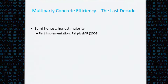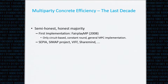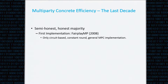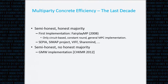In the multi-party case, there's also been tremendous improvements. The first implementation was FairplayMP, and this is in fact the only circuit-based constant-round general MPC implementation. It is secure only against an honest majority. Other implementations secure against an honest majority include SEPIA by Burkhart et al., VIF by Damgård et al., and Sharemind. When talking about the semi-honest model without an honest majority, a notable work is the GMW implementation by Choi et al.